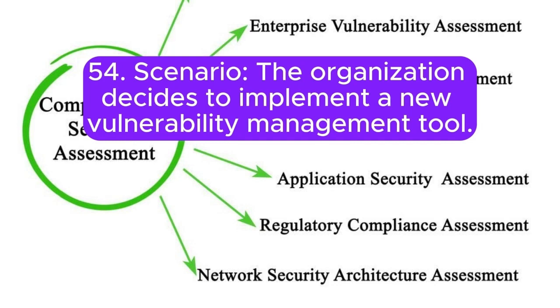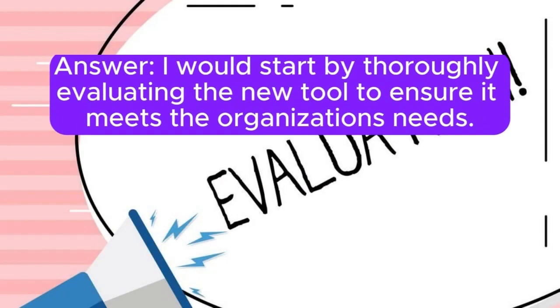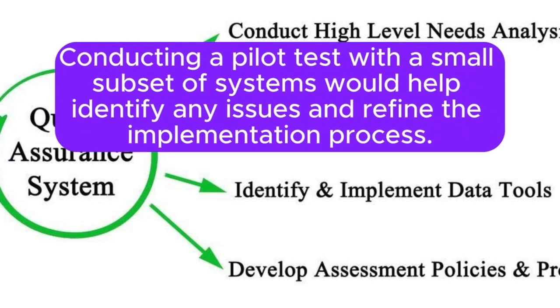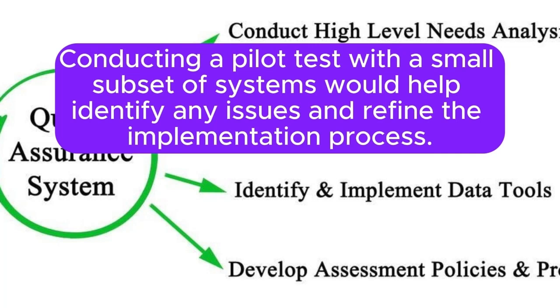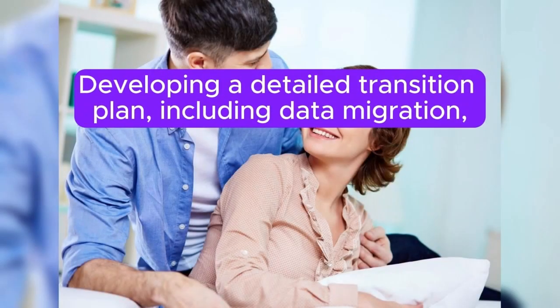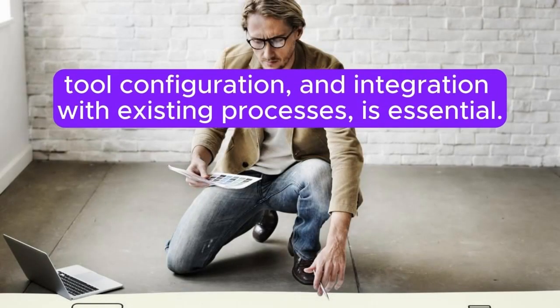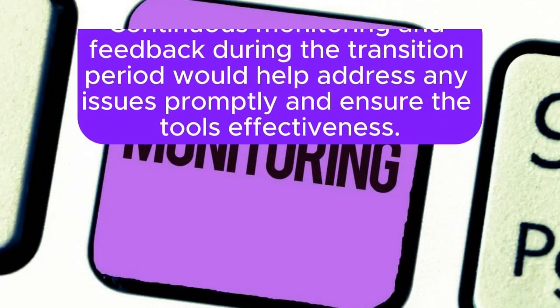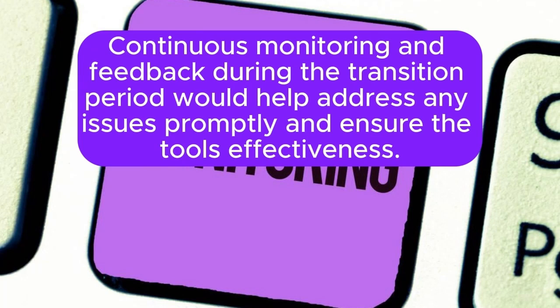Scenario 54: The organization decides to implement a new vulnerability management tool. How do you ensure a smooth transition? I would start by thoroughly evaluating the new tool to ensure it meets the organization's needs. Conducting a pilot test with a small subset of systems would help identify any issues and refine the implementation process. Developing a detailed transition plan including data migration, tool configuration, and integration with existing processes is essential. Providing training for the security team on the new tool's features and usage would ensure a smooth adoption. Continuous monitoring and feedback during the transition period would help address any issues promptly and ensure the tool's effectiveness.